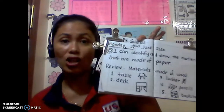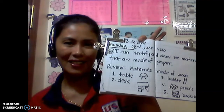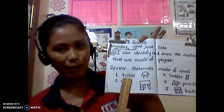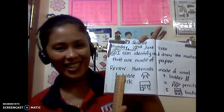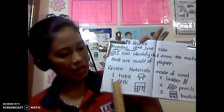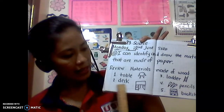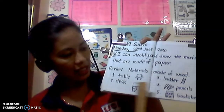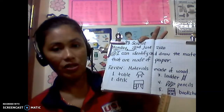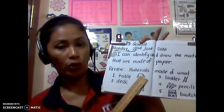You can color it if you want. So here we have the table — look at my table, it looks like a sun, right? So last time, the things that are made of wood: we have the table, the desk, the ladder, we have the pencils, and the bookshelf. So these are the things that are made of wood.